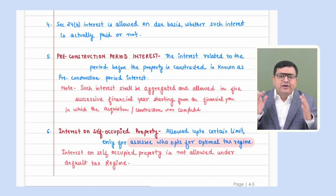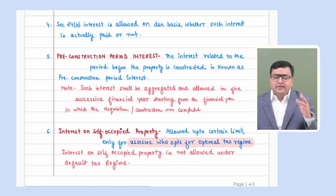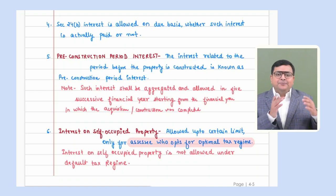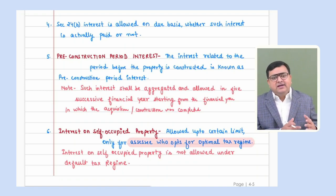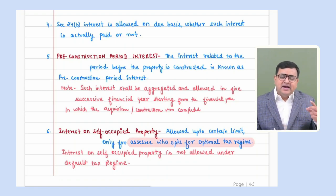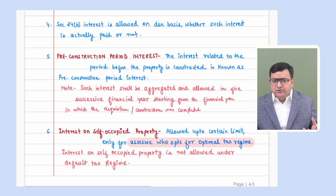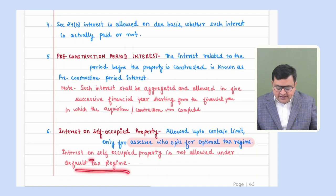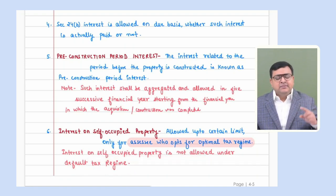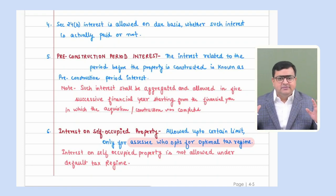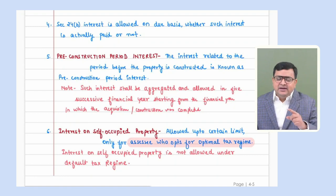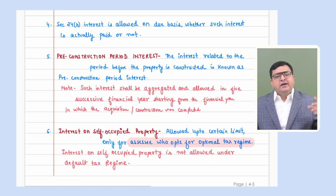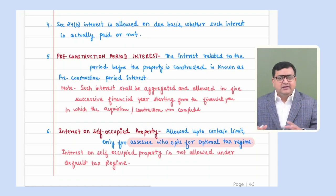But if the assessee is following the optional tax regime, Section 24B is allowed for self-occupied property with a maximum limit of ₹2 lakh or in some cases ₹30,000. For let out or deemed to be let out property, there is no limit for 24B and it is allowed under both regimes. But for self-occupied property under the default scheme, not even a single penny of 24B is allowed.